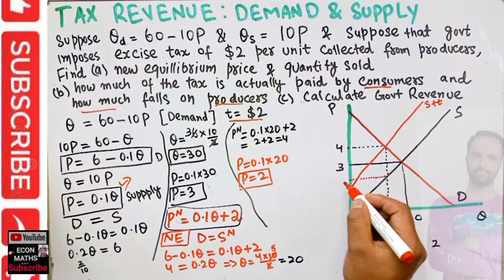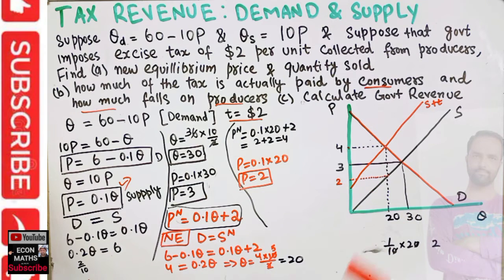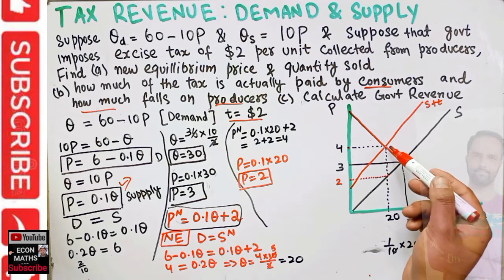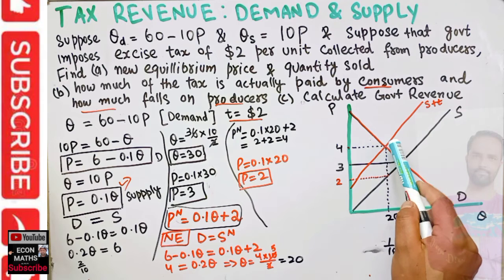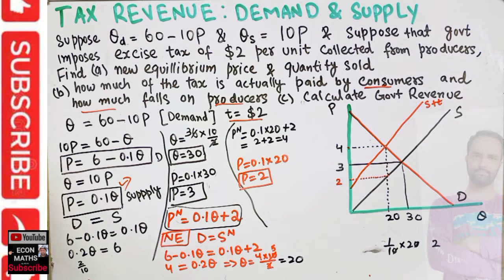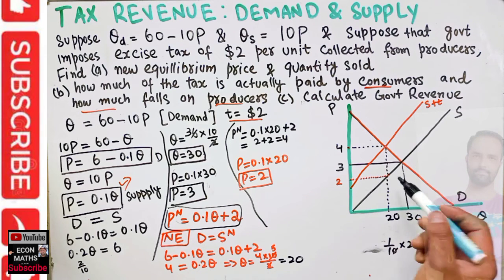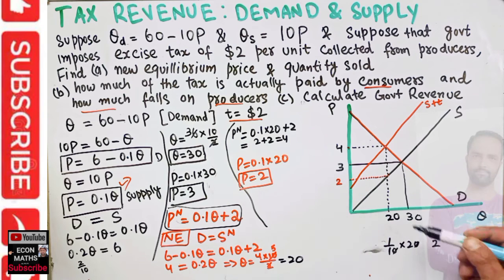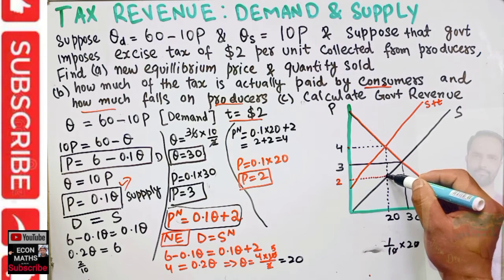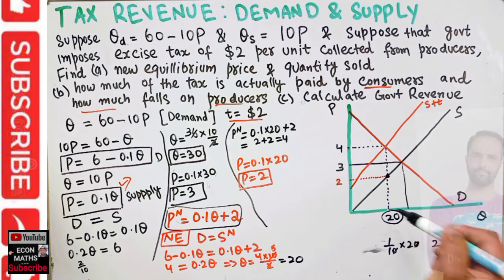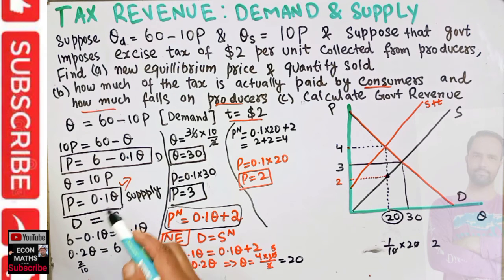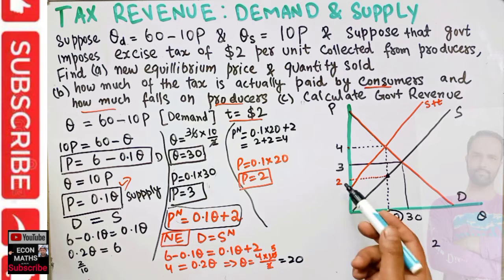That means producers will receive a price of 2, while consumers are paying a price of 4. After the imposition of tax, the equilibrium price is 4 and the price received by producers is only 2 — found by plugging q equals 20 into the original inverse supply function.